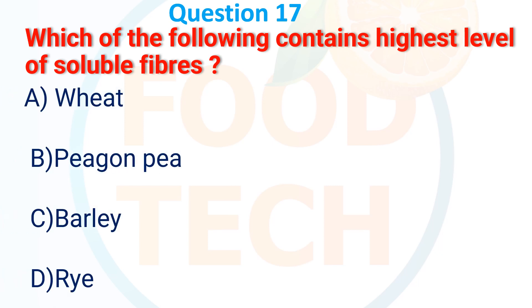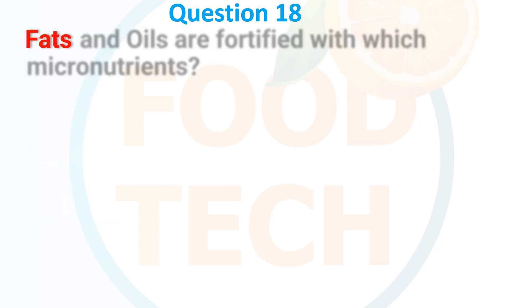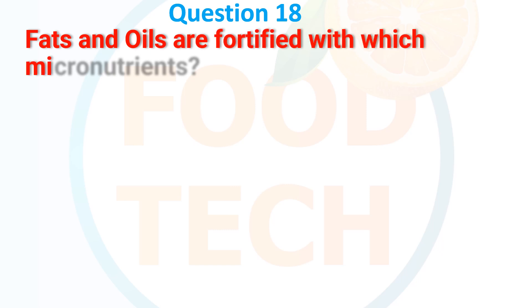Question 17: Which of the following contains the highest level of soluble fiber? A. Wheat, B. Rye, C. Barley, D. Rye. The answer is C. Barley.